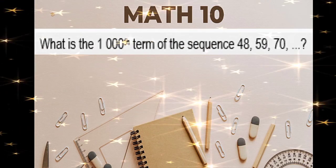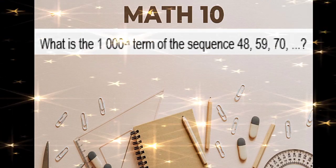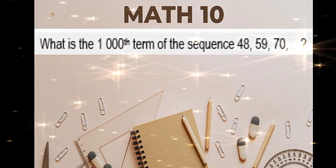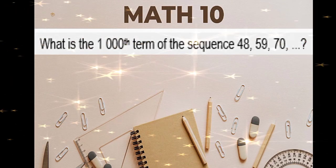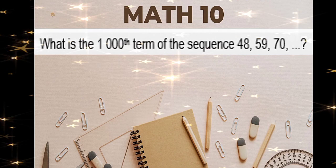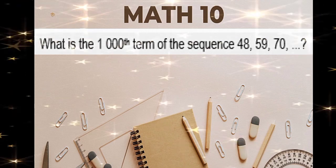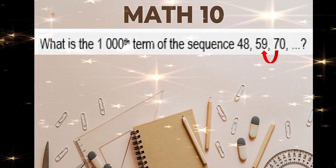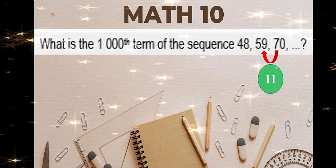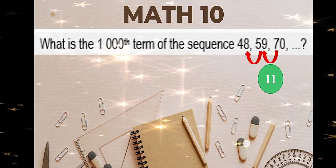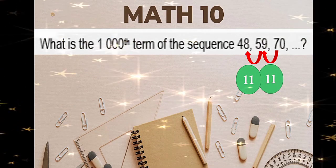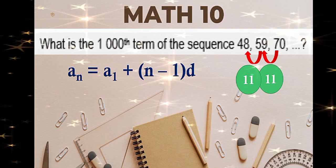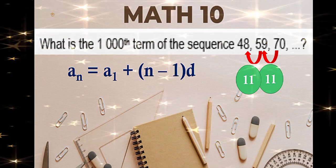Number 2: what is the 1000th term of the sequence 48, 59, and 70? This is an example of an arithmetic sequence and we are going to find the 1000th term. We need to look for the common difference. So 70 minus 59 is 11. 59 minus 48 is 11. This is the common difference. This is the formula for the nth term of your arithmetic sequence.